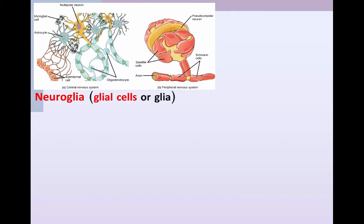We've known about glial cells now since the middle of the 19th century, but they've really been kind of the forgotten cells of the nervous system. Neuroglia simply stands for nervous glue, and that's what we thought the glial cells did — they held things together and supported the neurons, which were the business end of your brain. Over the past 20 years or so we've really started to learn far more about the importance of glial cells and what they do.